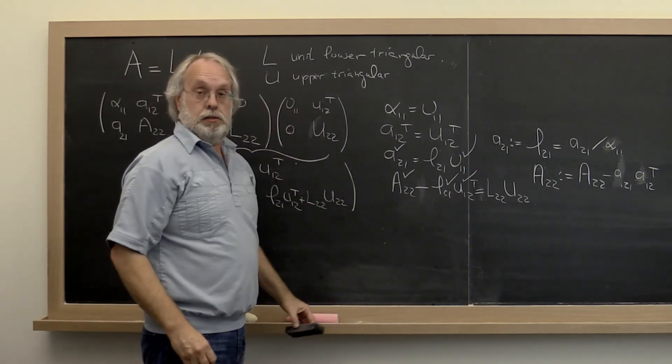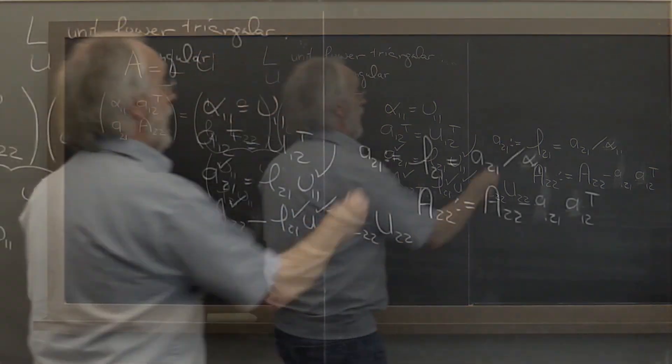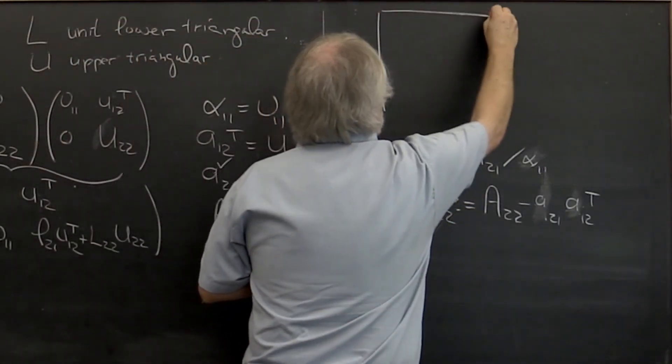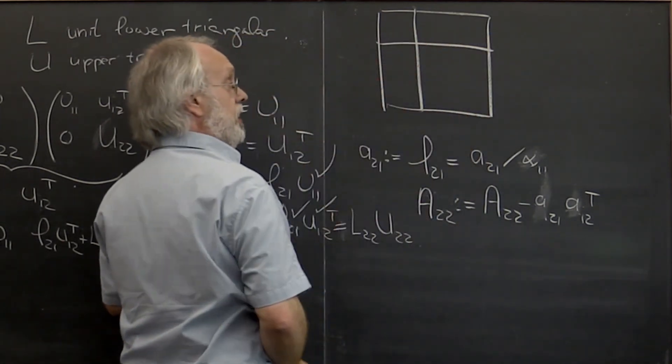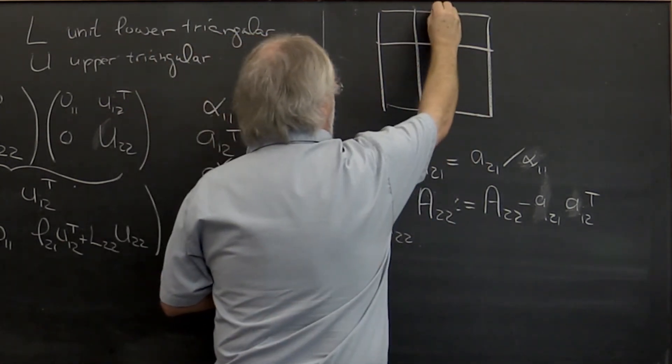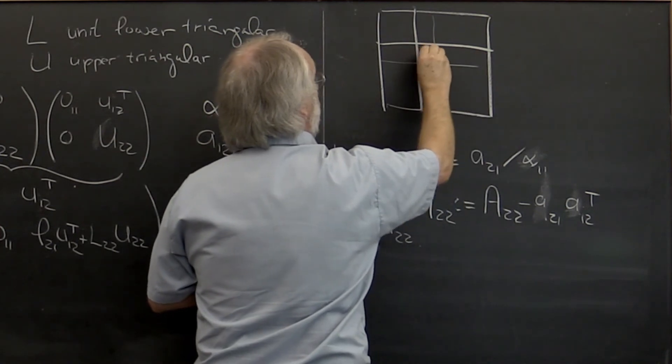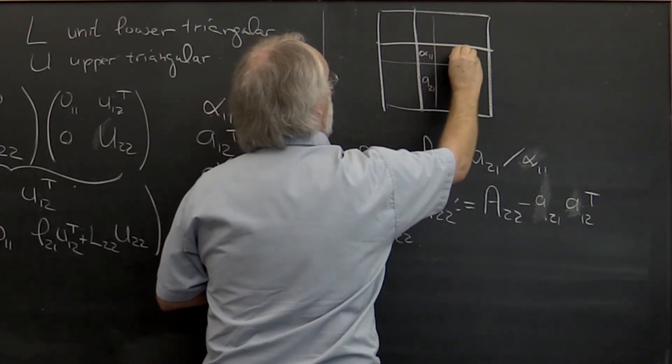So in general what happens is we have a matrix. We've already processed everything up to this point. And then when we repartition, our alpha 1 1 appears here and so forth.